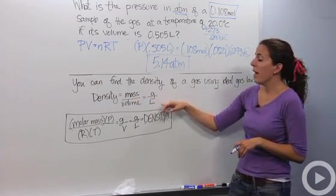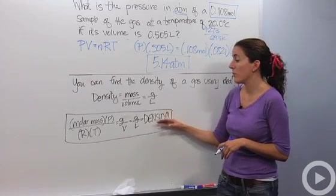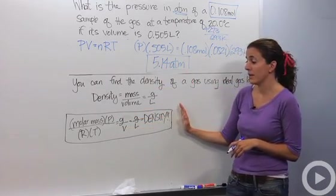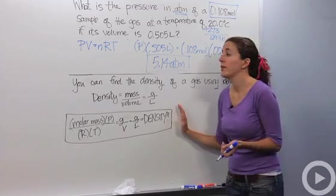So we know that density is mass over volume, or grams over liters. And actually if you rearrange the ideal gas law, you're going to get this to find density. Let's actually do that together. Let's derive this.